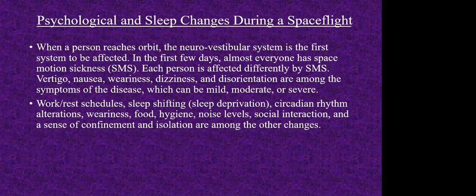Now comes the psychological and sleep changes that happen during space flight. Whenever astronauts or cosmonauts reach space, they all face some common problems. One of these common problems is SMS, or Space Motion Sickness. Space motion sickness further leads to certain other issues such as nausea — a sensation of vomiting — vertigo, which is basically a spinning sensation where it feels as if your head is spinning, as well as disorientation and dizziness.